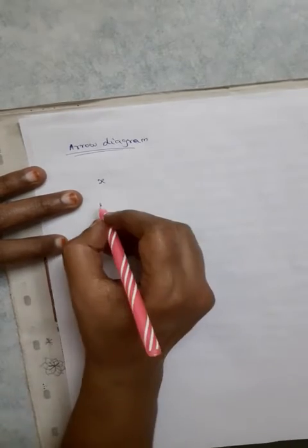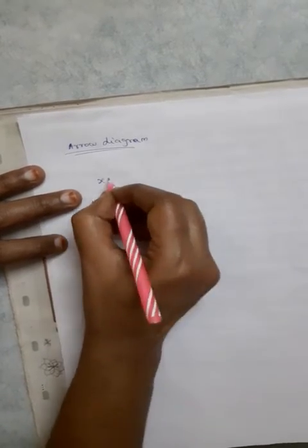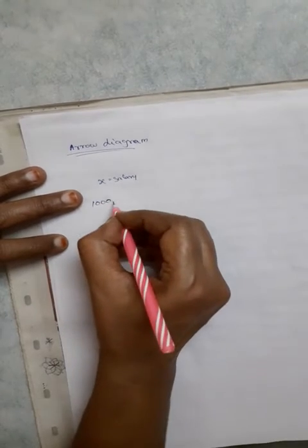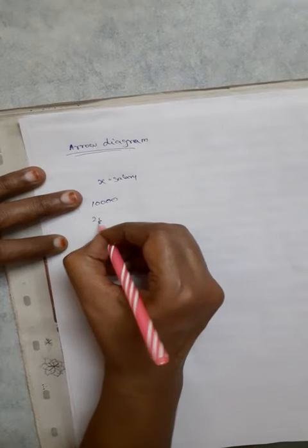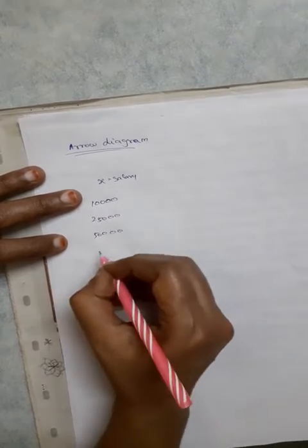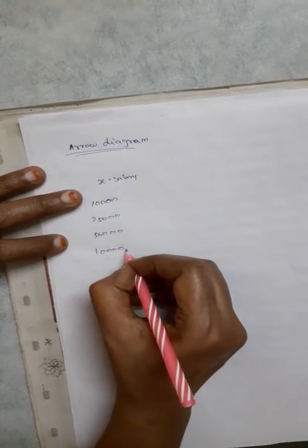If you use X, the domain X is equal to salary given. So 10,000, 25,000, 50,000, and 1,00,000.